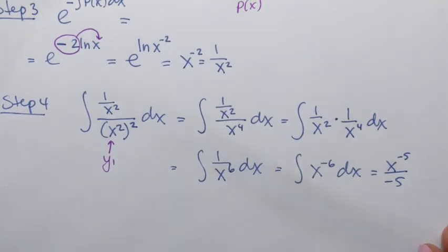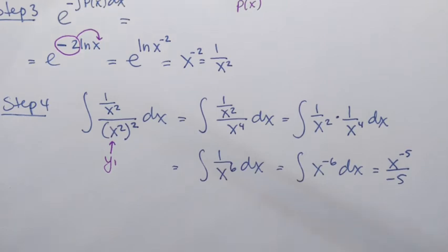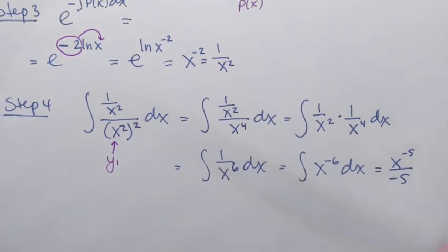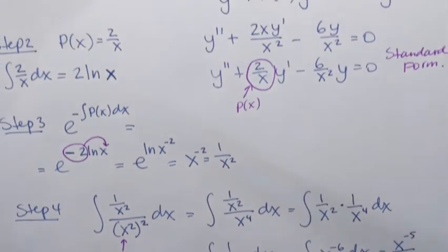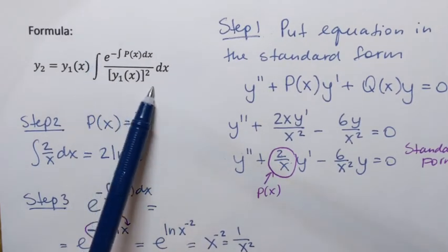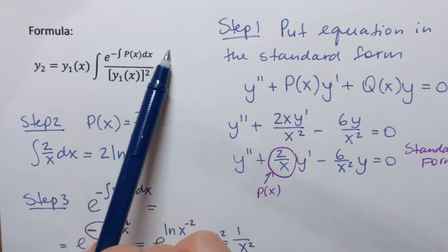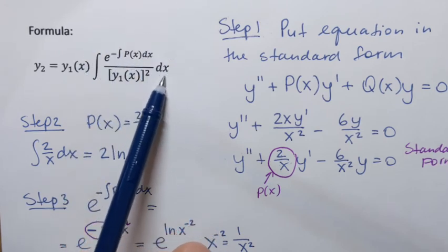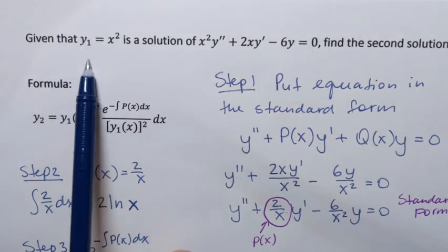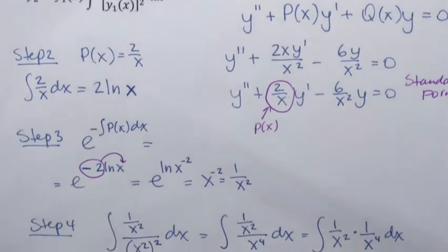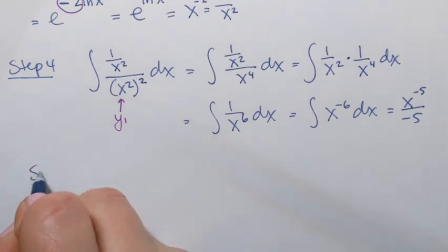Notice that I'm not writing any constants of integration anywhere. I integrated twice — in step 3 and step 4 — without writing constants, because we're trying to find a particular solution; all those constants will appear once we write down the general solution. So that was step 4. Finally, what we did in step 4 was find the result of that integral. The last step is simply to take that result and multiply by the given solution y1, which is x squared in our case. So we're ready to find the second solution.